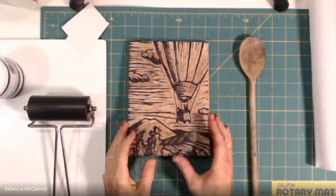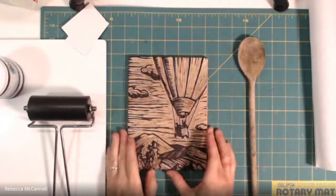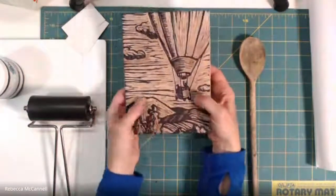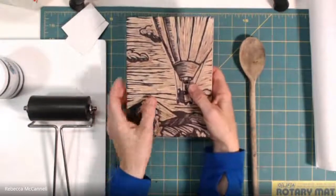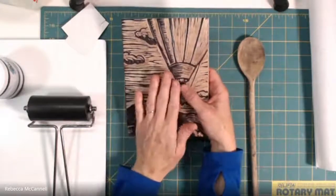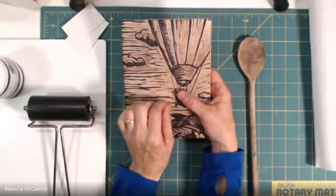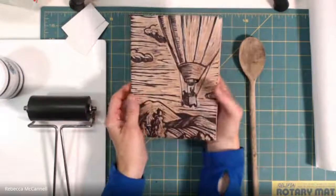Today we'll be inking up our wood block. This one has been inked before, but if you're just proofing it for the first time after you've carved it, you should remember to brush any scrap bits of wood out from the low areas of the block so they don't get mixed in with your ink.